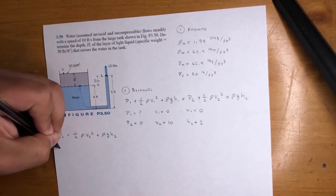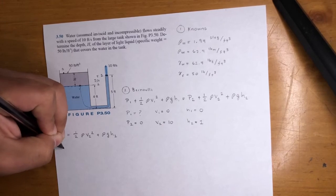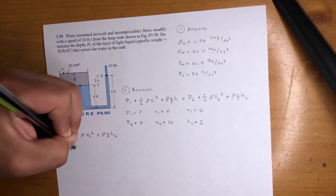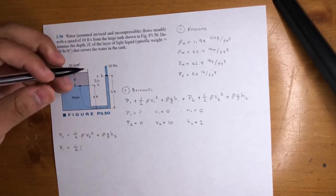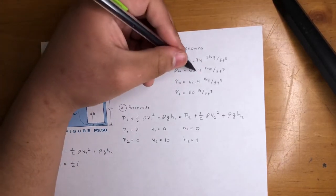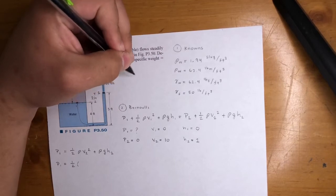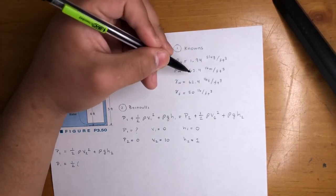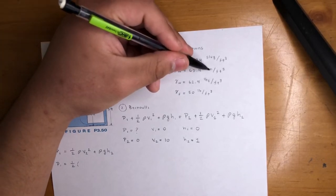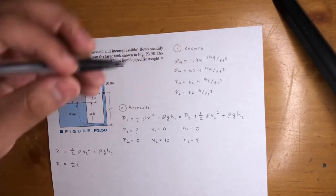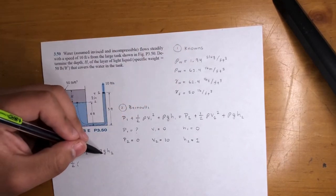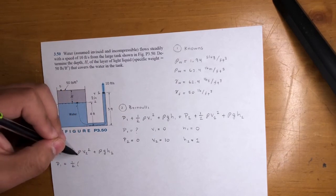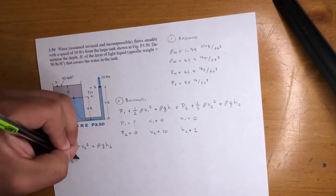Let's start plugging in some numbers. So P1 is equal to one half. Now, density, again, we don't use the 62.4 because this is also density, right? This one right here, the one I told you. That's also a density, but that's a pound mass. You could only use this number when you got gravity involved. So not here, if that makes sense. So be careful.